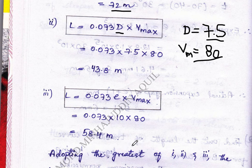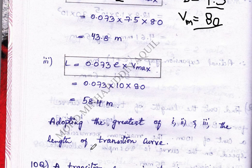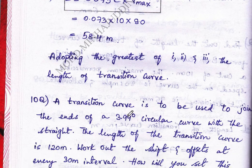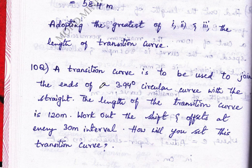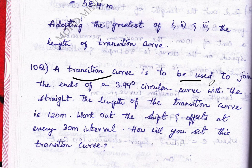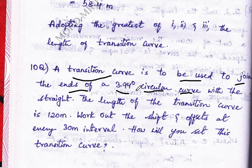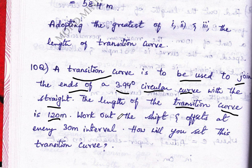Therefore, adopting the greatest of all three values gives the length of transition curve. Moving to the next problem: a transition curve is to be used to join the ends of a circular curve with a degree of curvature of 3.94 degrees with a straight line. The length of the transition curve is 120 meters. We have to calculate the shift and offset at every 30 meters interval.